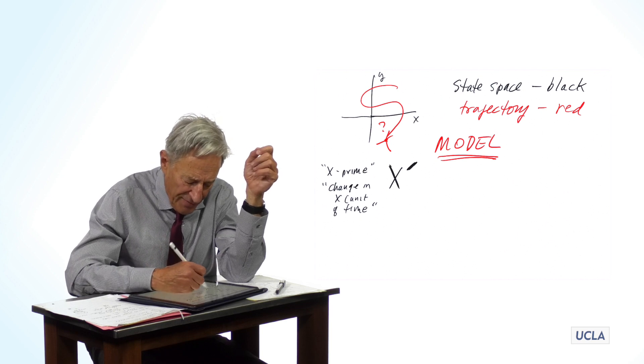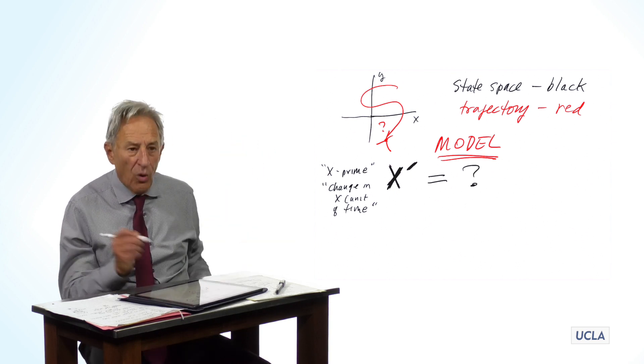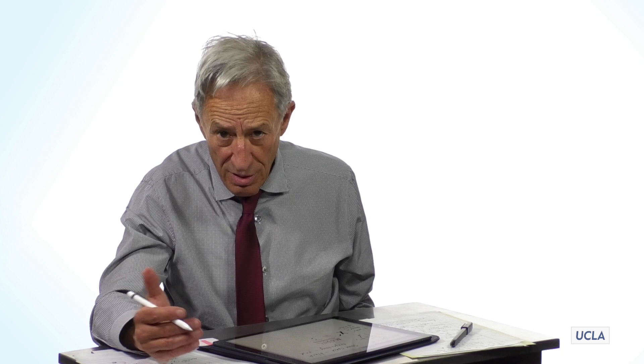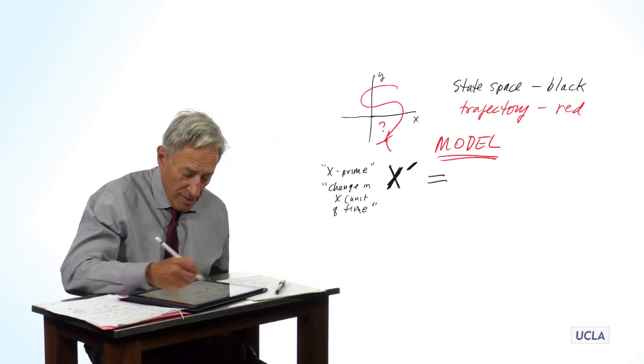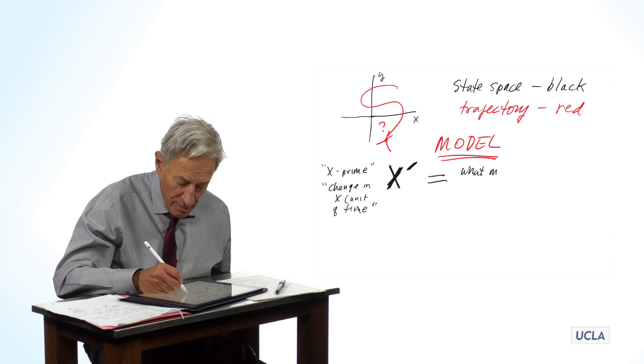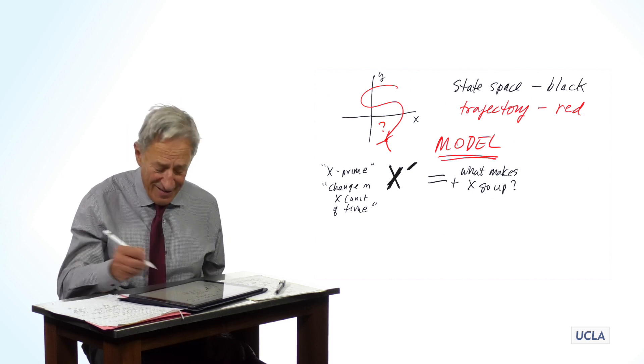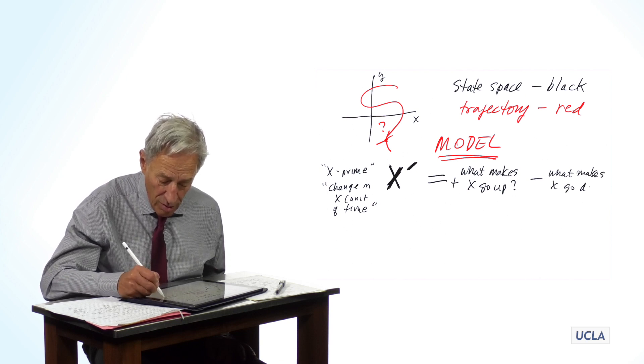And so now we're going to write the state variable here. And we're going to put this prime symbol next to it. And now we're going to ask, what changes x? What are the factors that make x change? In particular, what makes x go up? What makes x go down? And then we're going to put those factors over here. And we're going to put factors that what makes x go up. And of course, that's going to have a positive sign. And then we're going to subtract from that what makes x go down. So that, of course, depends upon the science and the setup and the details of the particular situation.